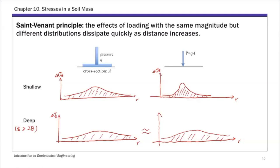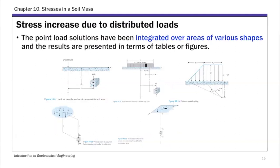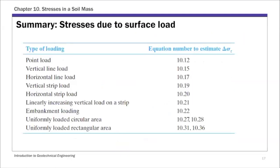In many engineering applications, because you have a finite shaped surface load, you sometimes need to estimate the stress increase close to the surface. The way to get solutions for distributed loads is to integrate the point load solution over finite areas. There are a few examples of finite area surface loads, and we're going to focus on the uniformly loaded rectangular area. This solution is presented in a very similar form as the point load solution — an influence factor multiplied by the pressure.